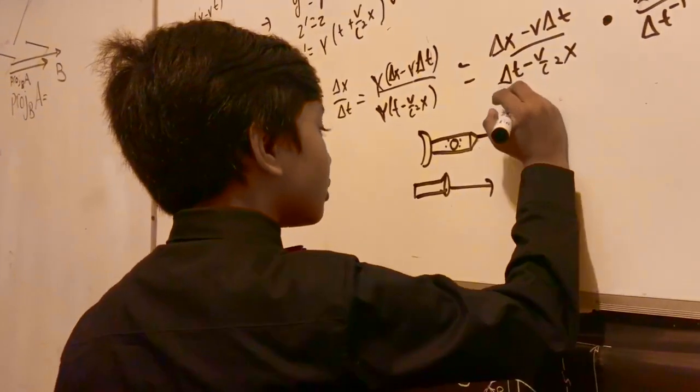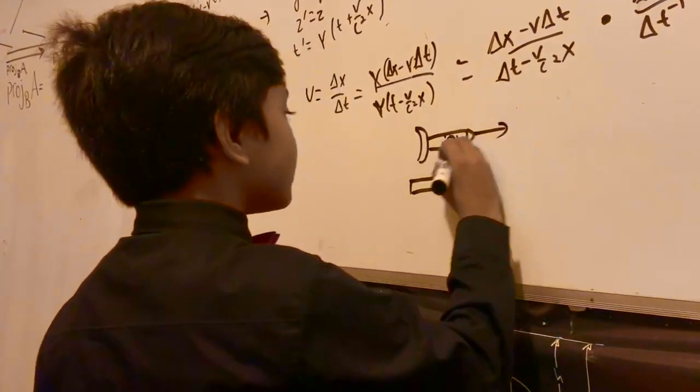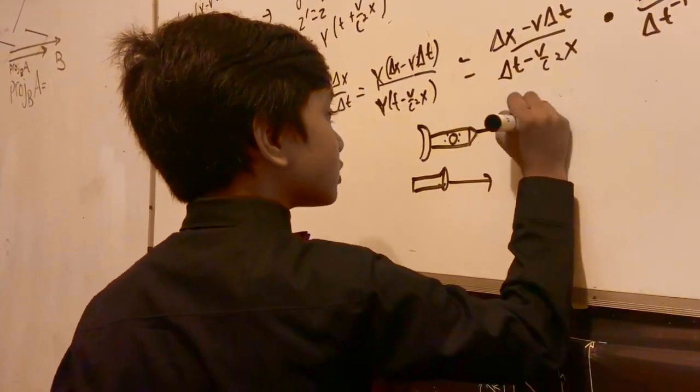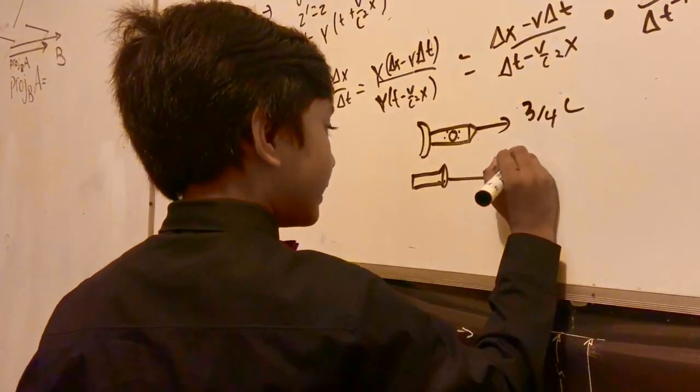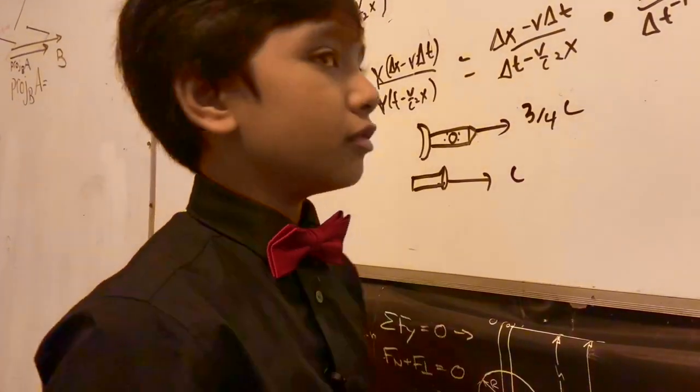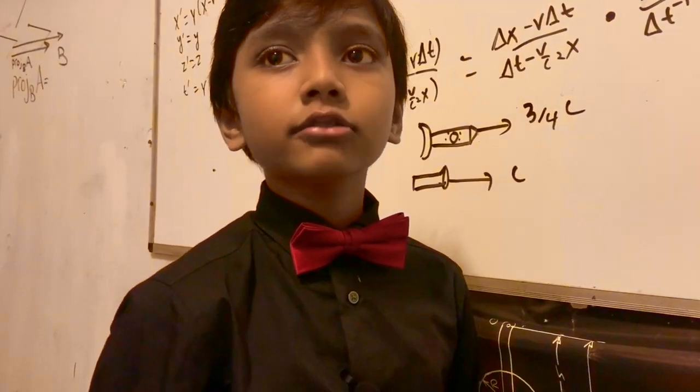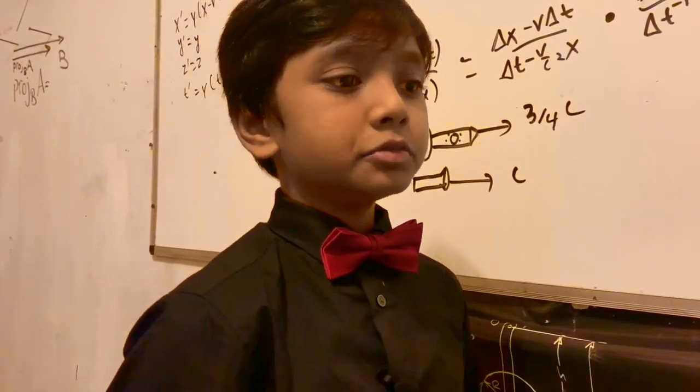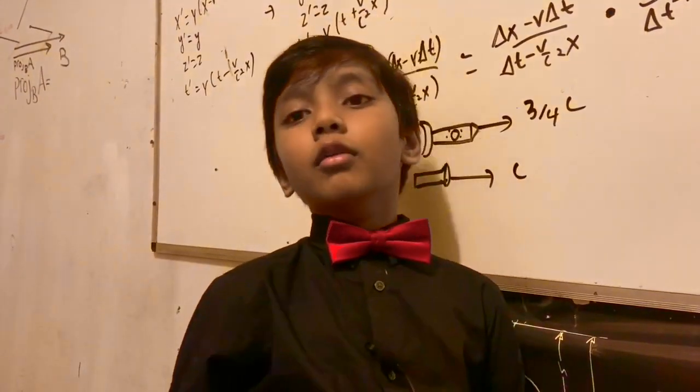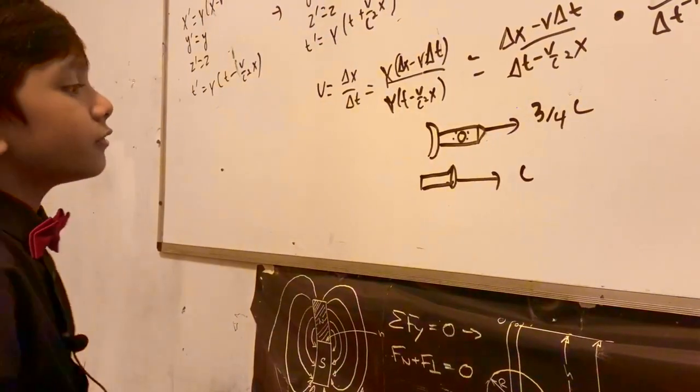Now, this will be equal to... So this rocket is going to go at three-fourths the speed of light, and this light is going to be equal to c. So now, the question is, for an observer on the ground, what is the average velocity of this rocket?